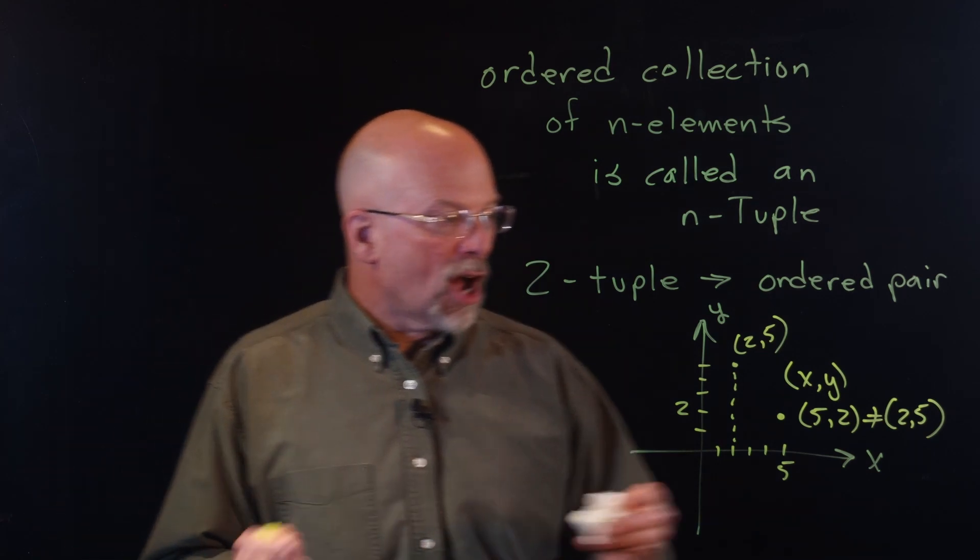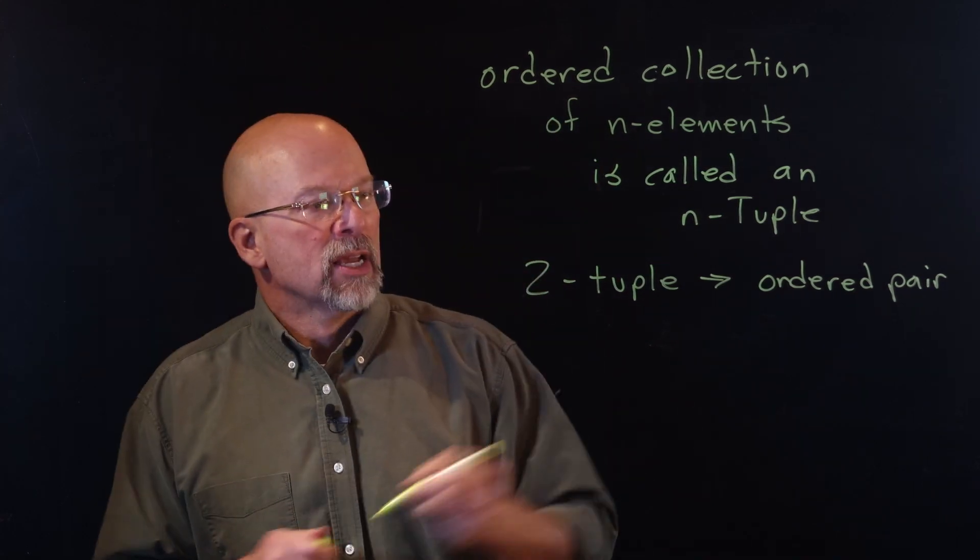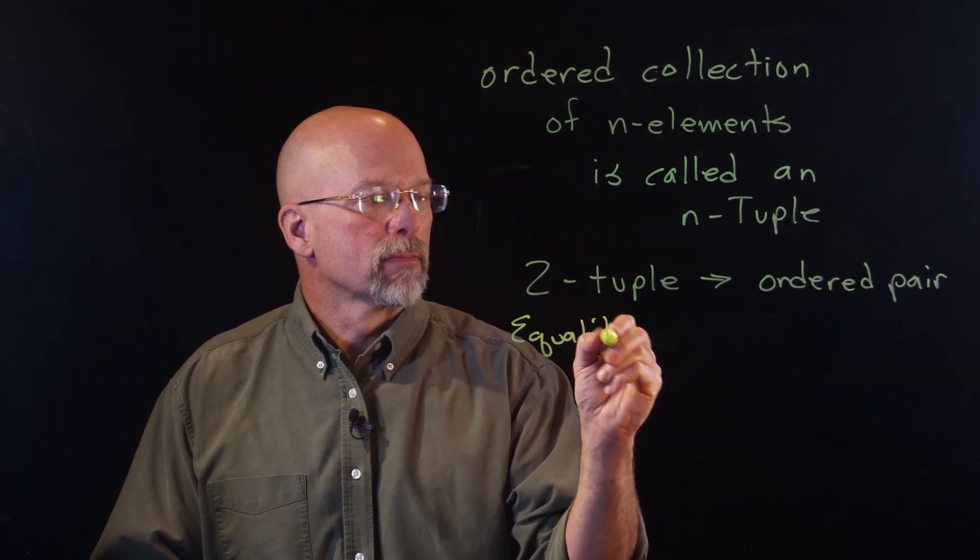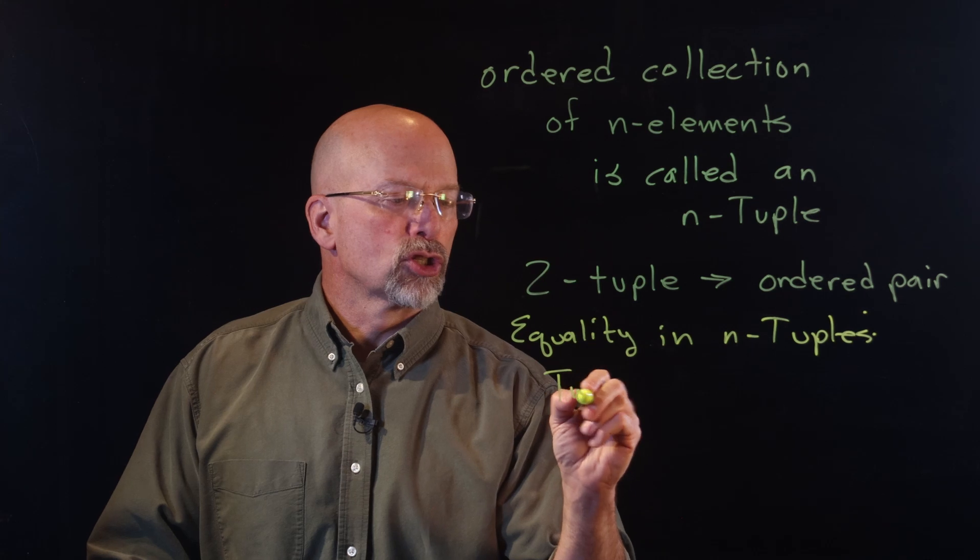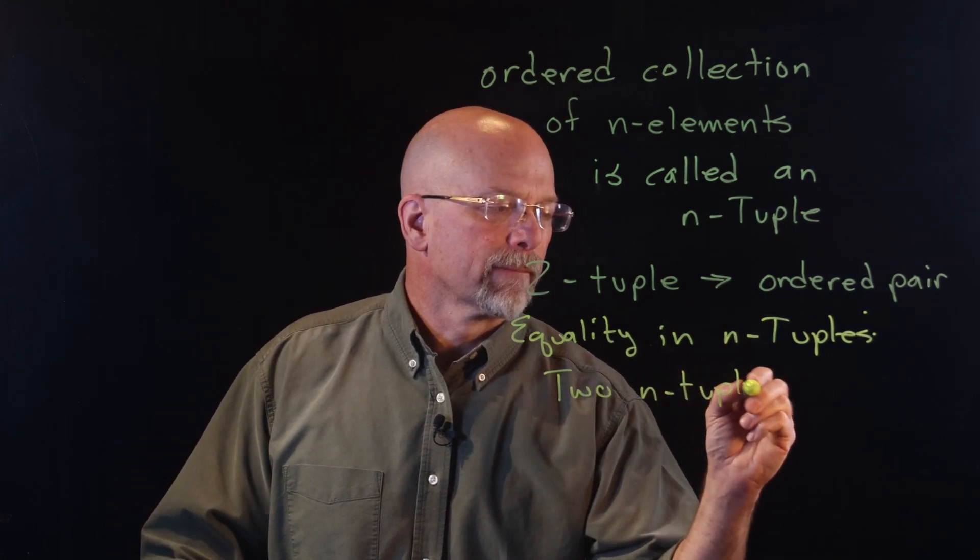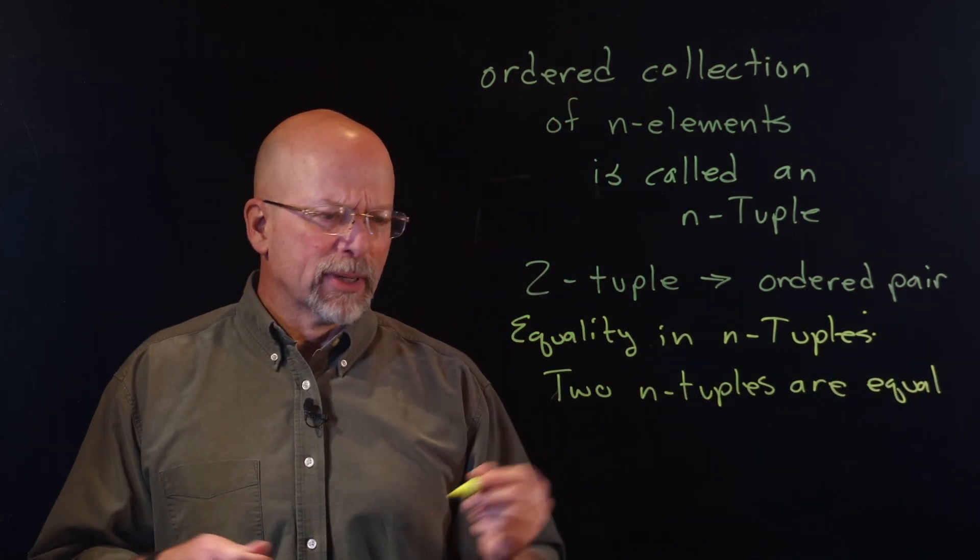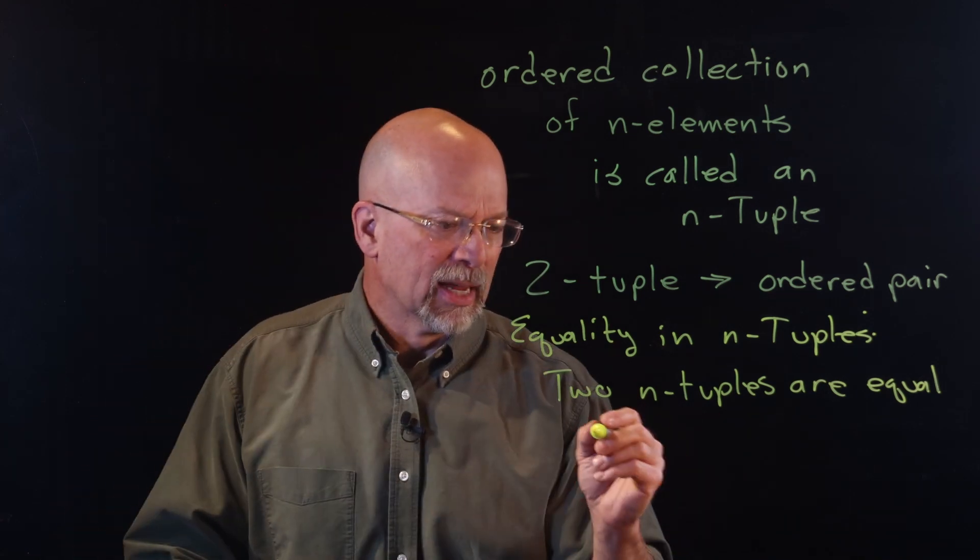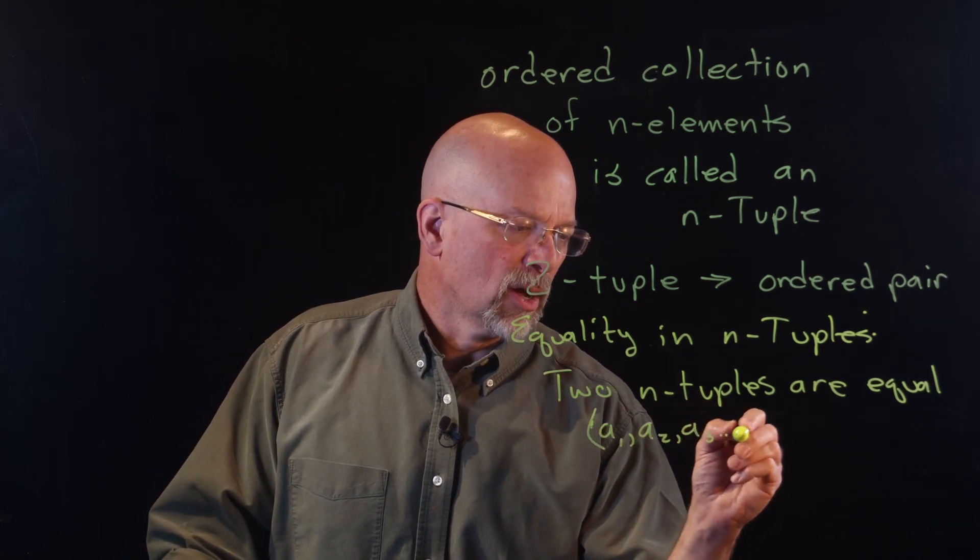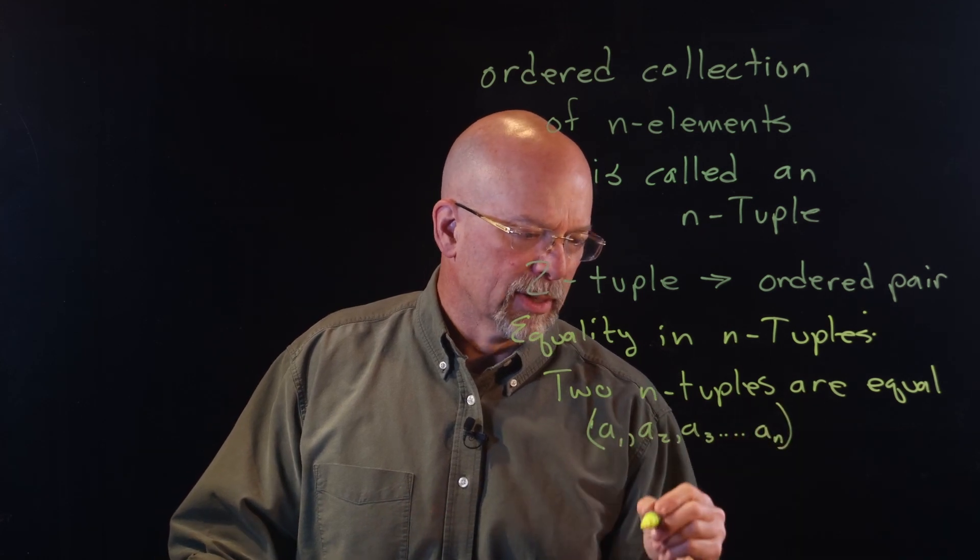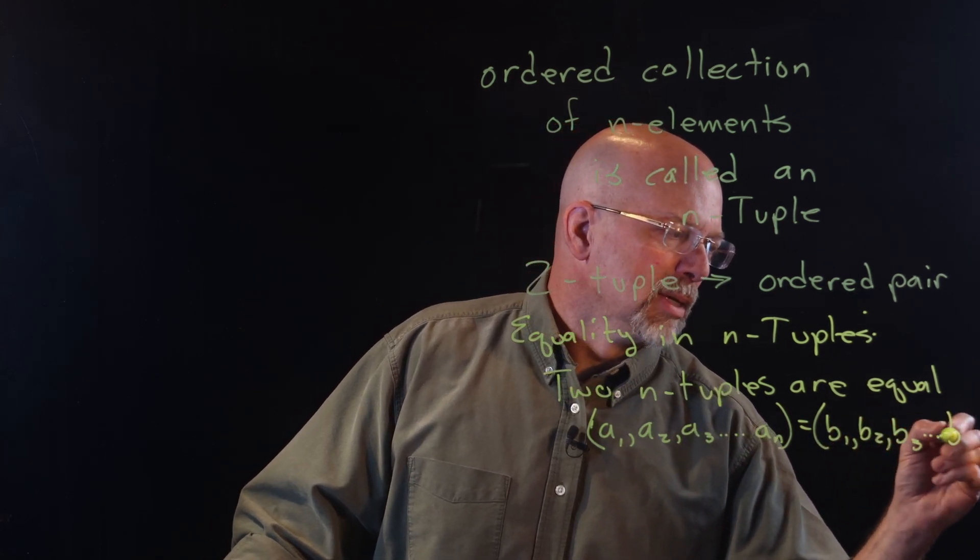Now, whenever we talk about this idea of equality inside of an ordered n-tuple, so equality in n-tuples, basically what we're saying is 2 n-tuples are equal. Let's just say that I've got an n-tuple (a₁, a₂, a₃, all the way up to aₙ), so there are n elements, is equal to (b₁, b₂, b₃, all the way up to bₙ).